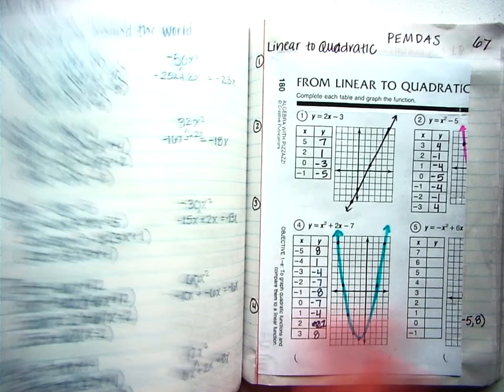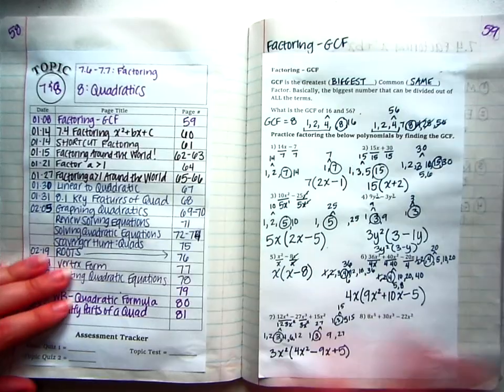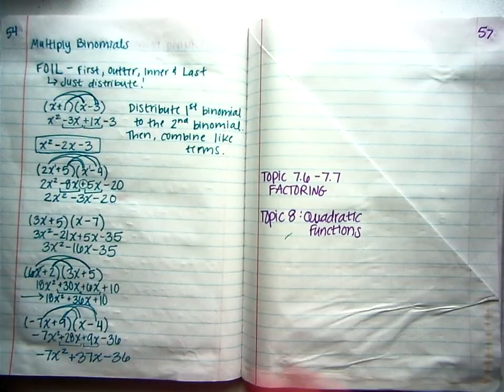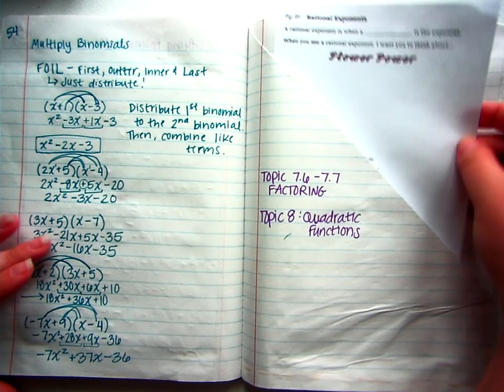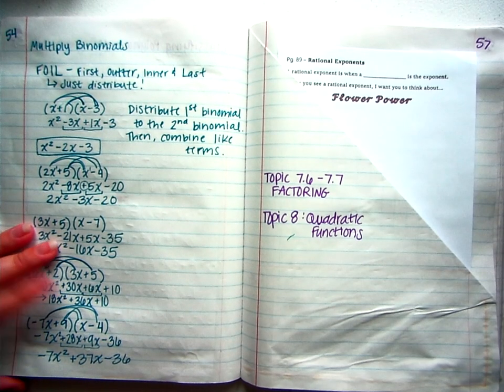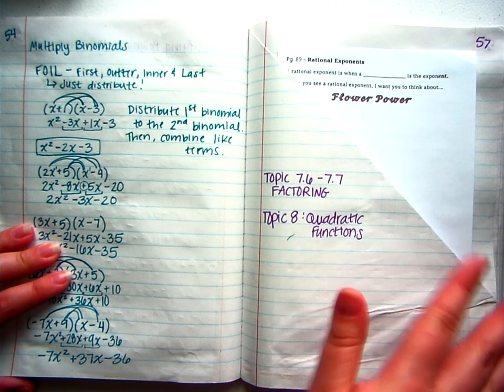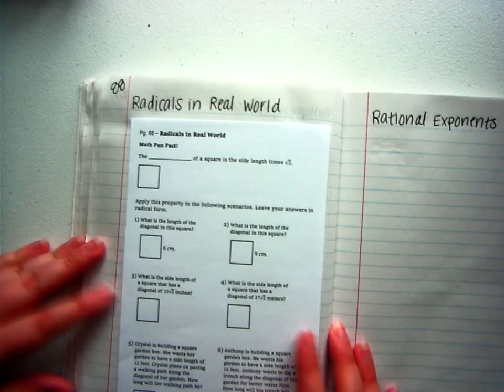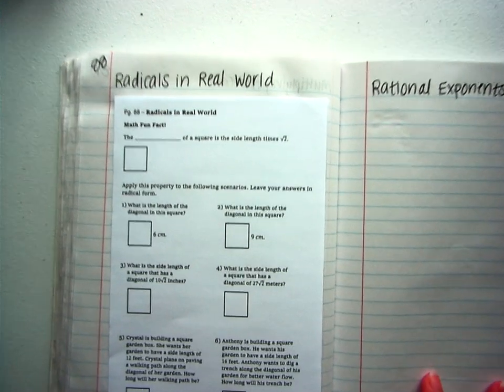And Radicals are still actually a part of Quadratics, believe it or not. For some reason, they lump them together in our book. So we will make a new pocket page soon after we're done with Radicals. Okay, back to page 88. Radicals in the Real World.